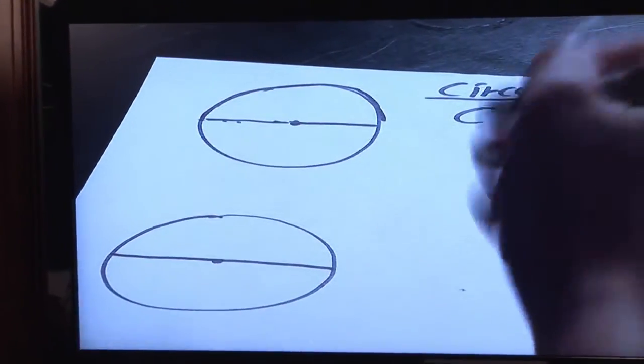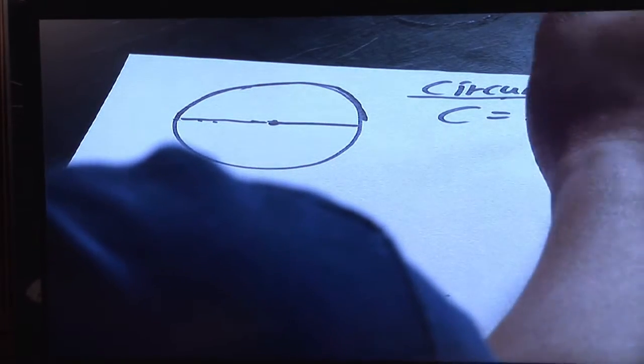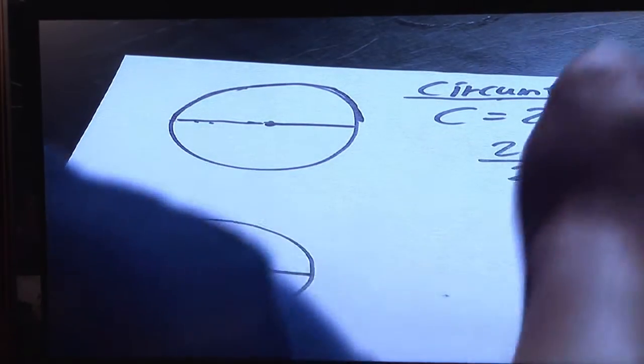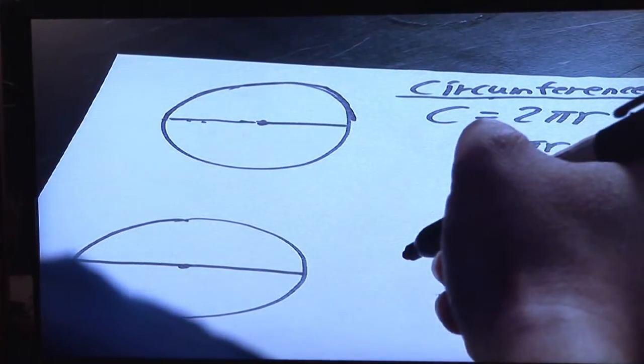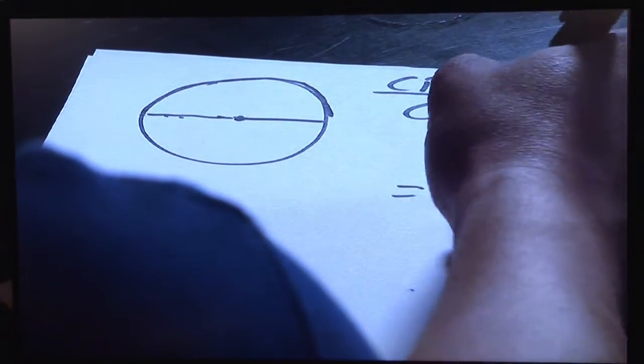It all starts with the circumference of a circle which is C equals 2πr. Now, a semicircle by definition is that of a half circle. So if a semicircle is a half circle, then for the circumference of a semicircle, you just take the formula 2πr and divide that by 2 or multiply by a half. And what ends up happening is that the 2's will cancel, so you're left with πr.